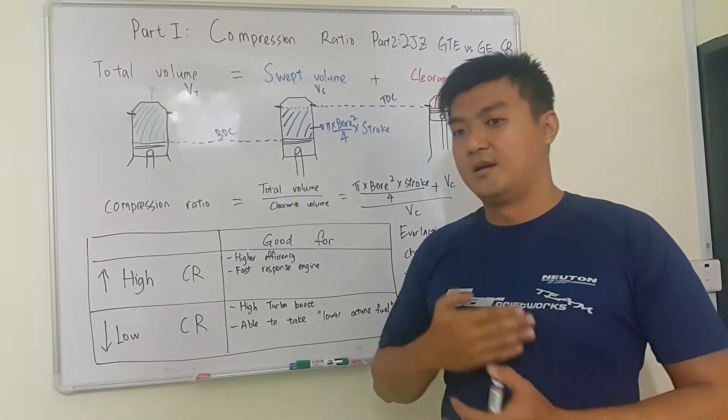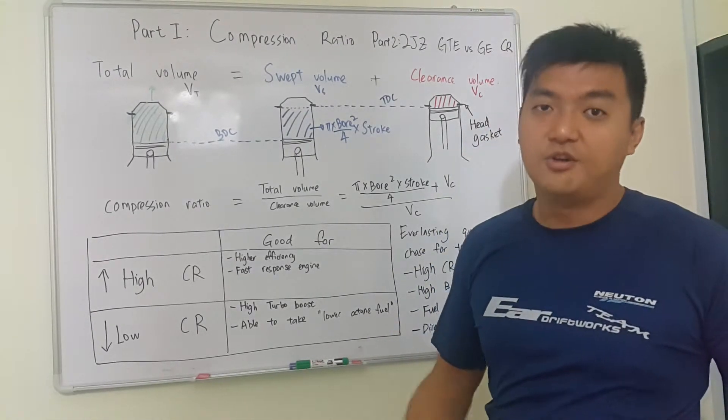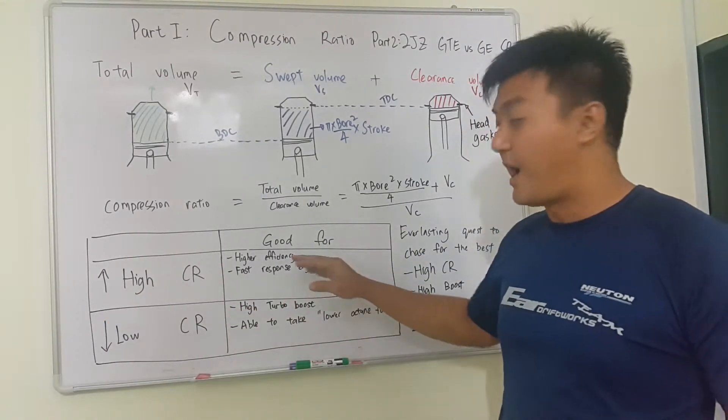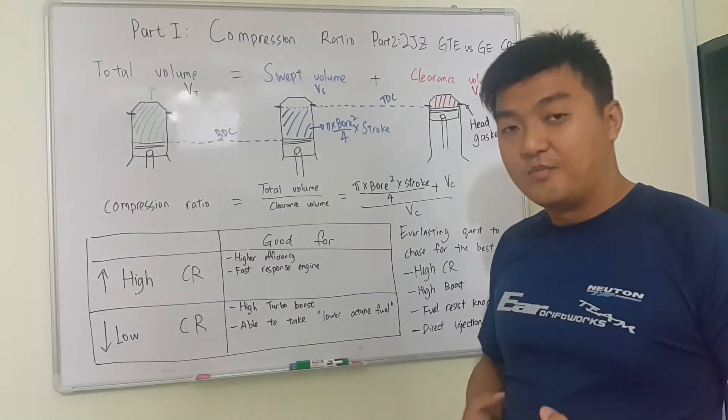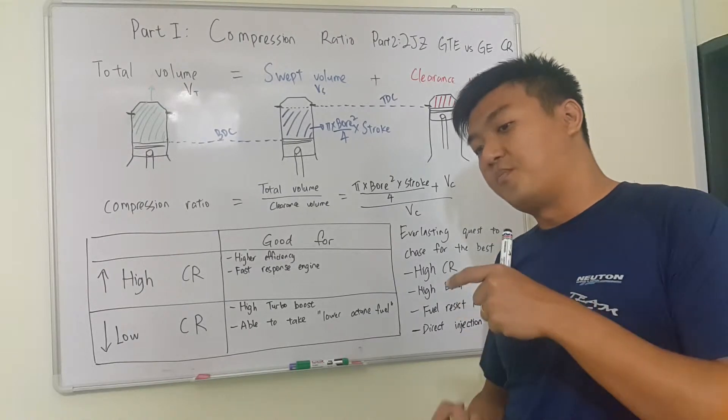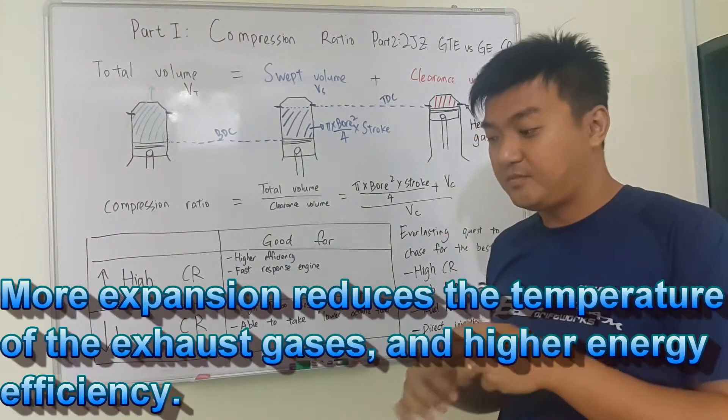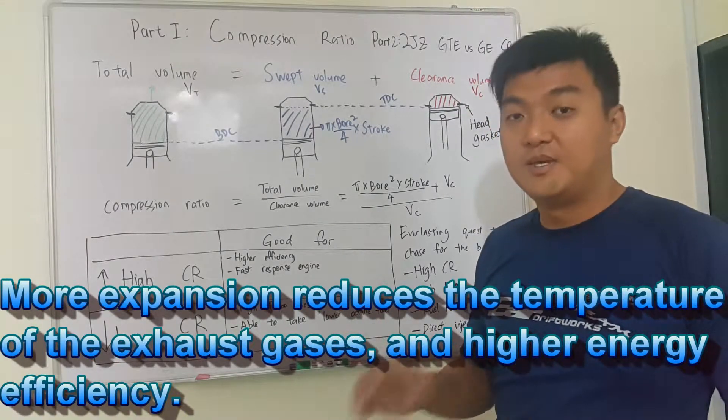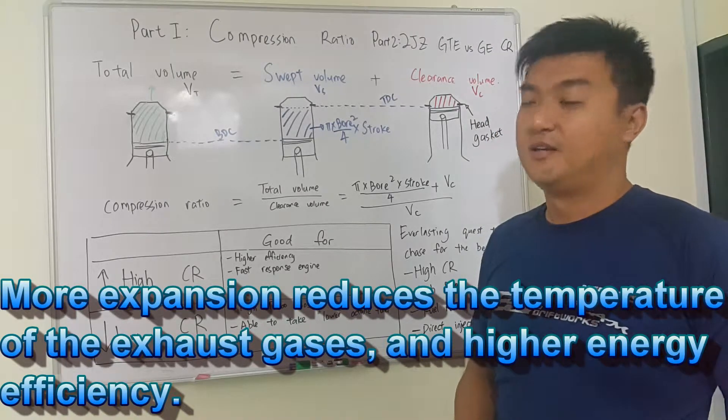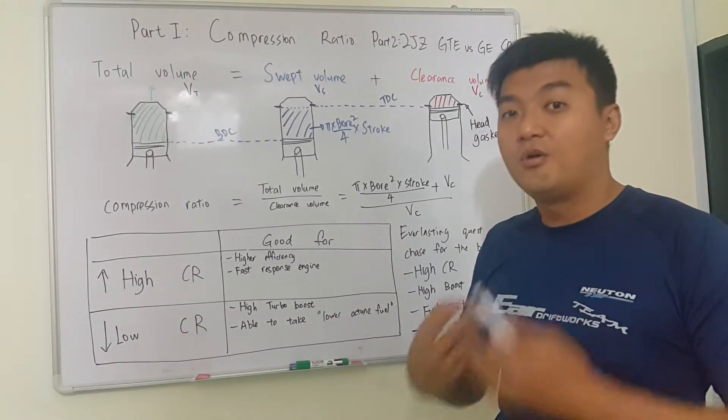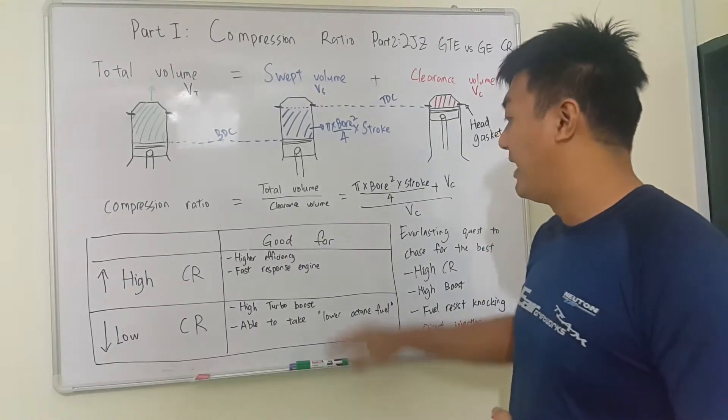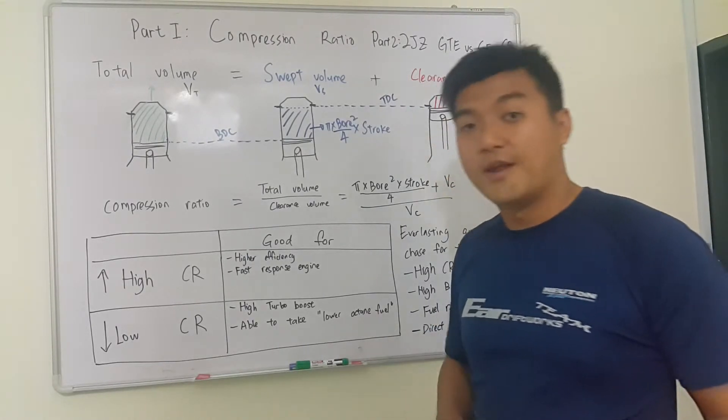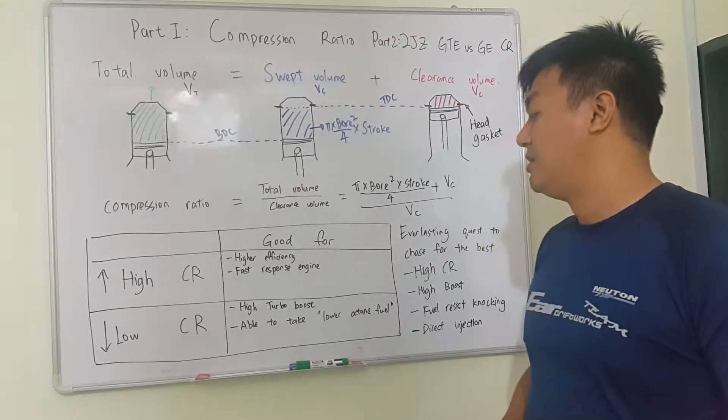So let's explore why we go for high compression ratio or why we go for low compression ratio. So for high compression ratio, it is good for high efficiency because higher compression ratio, you can think of it as a compression ratio or expansion ratio. Expansion ratio, if you have more, then you can get reduced exhaust temperature. That means higher mechanical efficiency. For a less amount of fuel, you can get more mechanical energy. This is what we want. And high compression ratio, you can get a very fast response engine. In a low RPM, it can rev up very fast. This is what we want too.